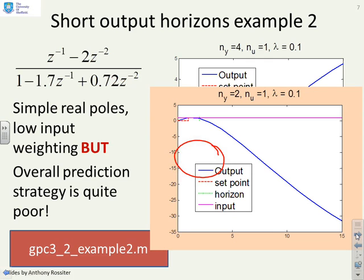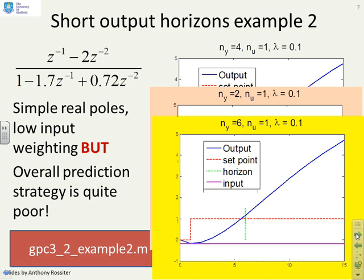What happens if I reduce the output horizon to 2? And here you can see that the predictions are totally disastrous. Or if I take the horizon up to 6 and you might say, well, it's slightly better here, but again, the predictions really are not good at all, especially beyond the prediction horizon.